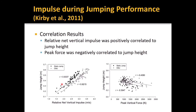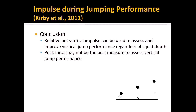Correlation results: across all depths, the relative net vertical impulse was positively correlated to jump height for both SJ and CJ. Across all depths, peak force was negatively correlated to jump height for both SJ and CJ, showing a negative correlation between jump height and peak vertical force. Conclusion of Study 2: the relative net vertical impulse can be used to assess and improve vertical jump performance regardless of squat depth, and peak force may not be the best measure to assess vertical jump performance.